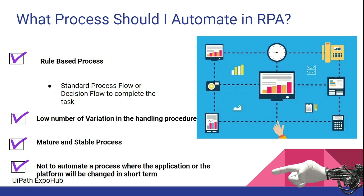Another very important pointer is that it must be a rule-based process — meaning you know where you start, where you end, and what conditions lead to which path. Think of it as a flow diagram: if this happens, do this; if that is the case, do that. It should have a standard process flow or decision flow to complete the task, with clear start and end points.